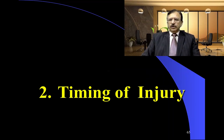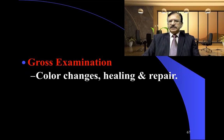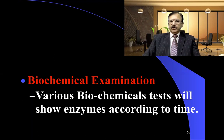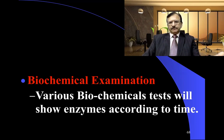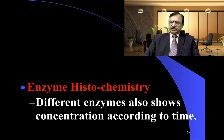Regarding the timing of the injury — how old a wound is — this can be determined from gross examination through color changes shown by the scab or blood, and from healing and repair phenomena. Microscopy reveals cellular invasion patterns, where the type of cells present helps determine time of injury. Various biochemical enzymes can also be tested to help establish timing. Enzyme histochemistry similarly helps determine the age of the wound.